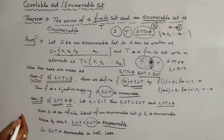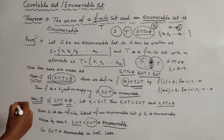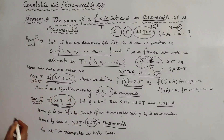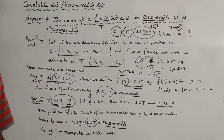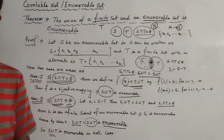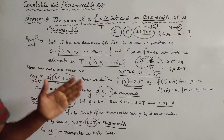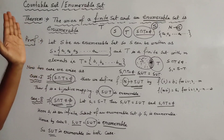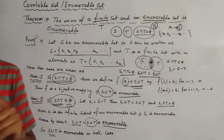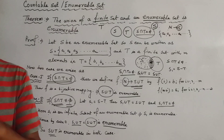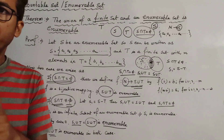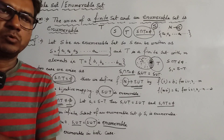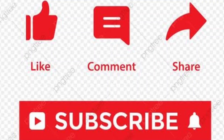Hence, in both cases — whether S ∩ T = ∅ or S ∩ T ≠ ∅ — S ∪ T is an enumerable set. This completes the proof of the theorem. For previous theorems and the definition of countable sets, see the link in the description box. Please follow Math A2Z. Thank you for watching.